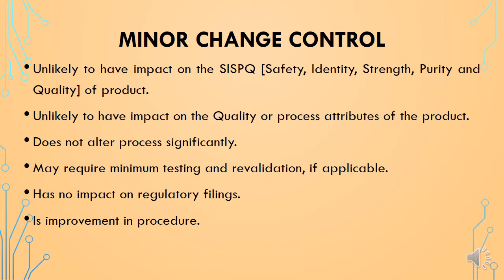The first class of change controls is the minor change controls. As we are dealing with change controls raised in the pharmaceutical industry, we should evaluate the impact of proposed changes on the SISPQ of a product. SISPQ means the safety, identity, strength, purity, and quality of the product. If the proposed change is unlikely to have an impact on SISPQ, or unlikely to have an impact on the quality or process attributes of the product, then we classify it as minor.